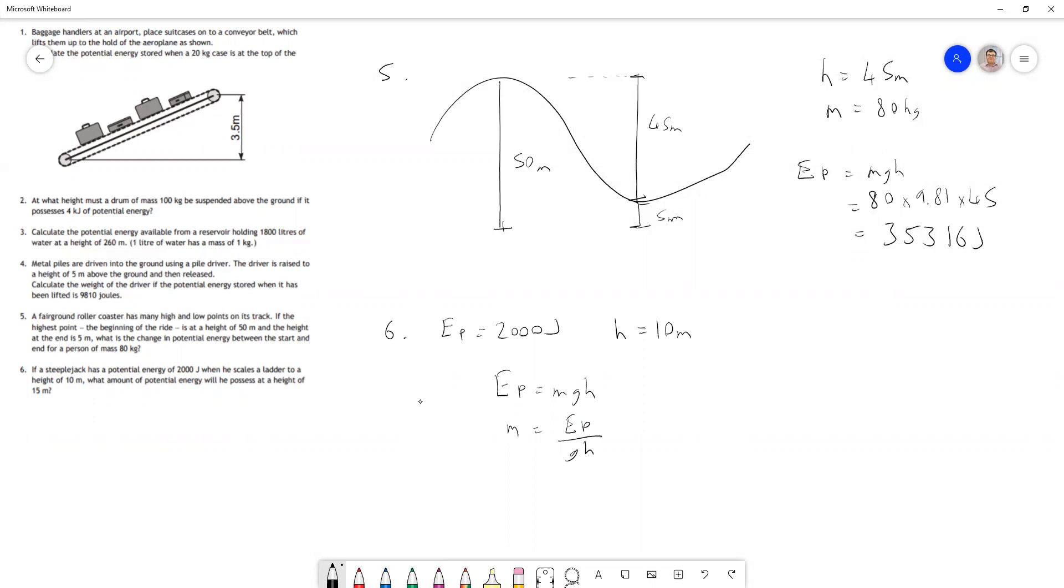We could say, well, Ep equals mgh, so I can rearrange to find the mass equals Ep divided by gh. I can work out the mass, then use that mass to work out potential energy at 15 meters. But we could also recognize that if he has 2000 joules at 10 meters, he'll have 3000 joules at 15 meters, because if we increase the height from 10 to 15, that's 50 percent bigger, so the potential energy will be too.